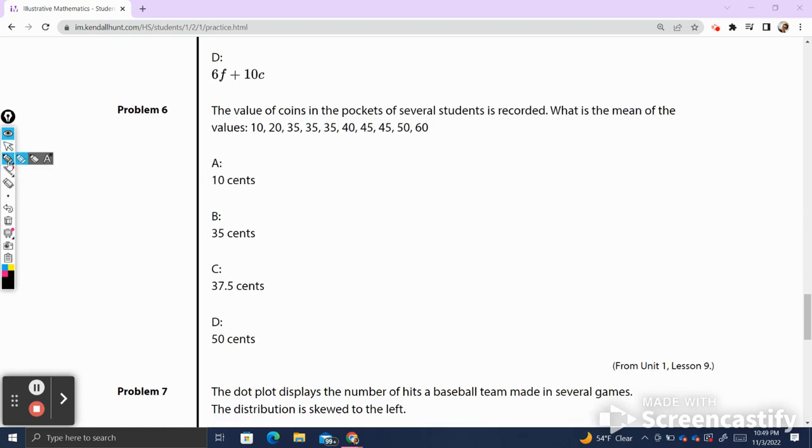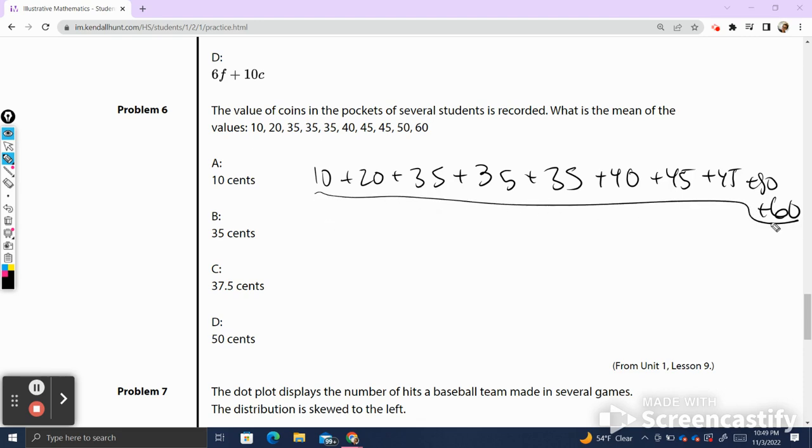Problem number six. The value of coins in the pockets of several students is recorded. What is the mean of this value? Oh my goodness, this is a lot of numbers. To find the mean, we have to add all of these numbers together. 35 plus 35, we're going to add 40 plus 45 plus 45 plus 50 plus 60. The next thing you're going to do is after you add those numbers together, we're going to remember that the line represents division. We're going to count up how many we have 1, 2, 3, 4, 5, 6, 7, 8, 9, 10. And we are going to divide by the number there is. I haven't done the math for this problem. So I'm going to leave this to you to pop into a calculator and identify the correct answer on your own.